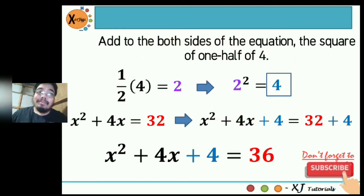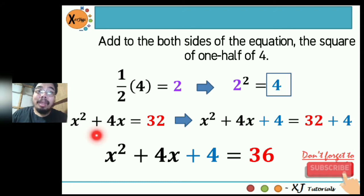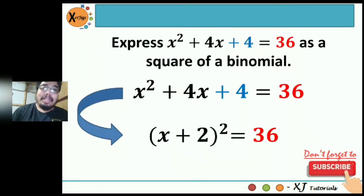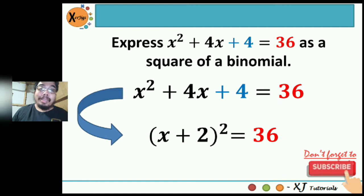On this step we are adding to both sides of the equation the square of one half of b. The value of b is positive 4: 4 divided by 2 is 2, and 2 squared is 4. After moving the constant term to the right side and adding the square of one half of b, the next step is to express x squared plus 4x plus 4 equals 36 as a square of a binomial — a binomial is composed of two expressions separated by a plus or minus sign. The answer is quantity x plus 2 squared equals 36.